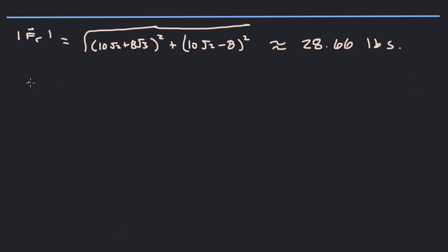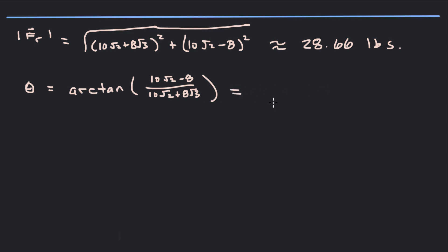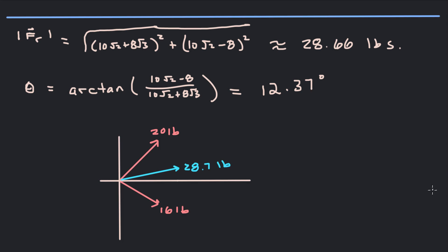Now theta is going to be the arctan of the y component over the x component. So arctan[(10√2 − 8) / (10√2 + 8√3)]. This angle in degrees is going to be approximately 12.37 degrees. So that's our magnitude and that's our angle. We can see that's exactly what we thought it was going to be — it's in the positive x direction and it does have a positive y component. So this 12.37 degrees right here — this is the resultant force FR.